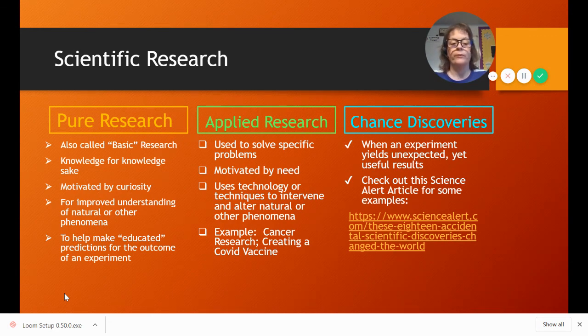Applied research is used to actually solve specific problems, and this one especially right now with COVID-19, it's motivated by need. Uses technology or other techniques to actually alter natural phenomenon, and our examples here we had cancer research, but today I added creating a COVID vaccine because that's what everybody's doing now. They're trying to apply what they know and create something that we really need. So that's actually them in the laboratory using that pure research, and unfortunately COVID being so new, the pure research is changing constantly because they're constantly learning new stuff.